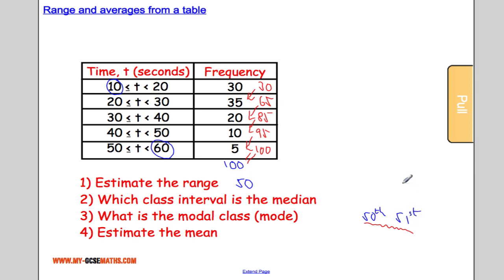And these two guys are the same, which means I've done it correctly. So where is the class interval with the 50th and 51st data point? It's going to be here. So our class interval that contains the median is going to be 20 less than or equal to t less than 30.